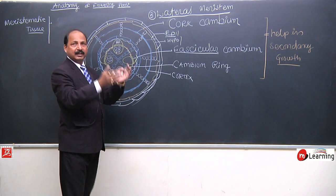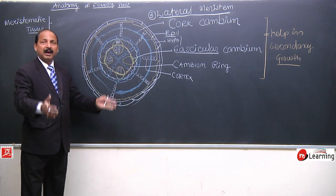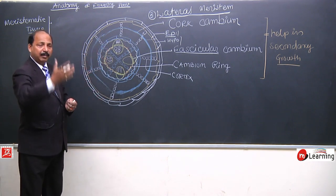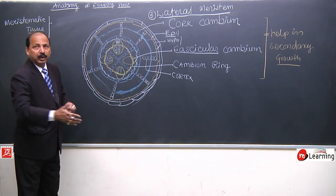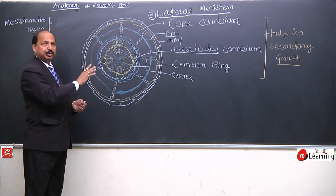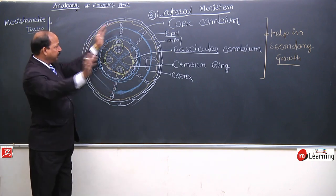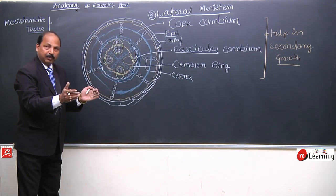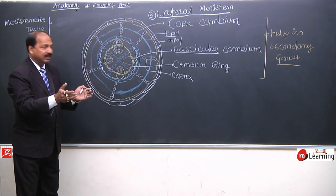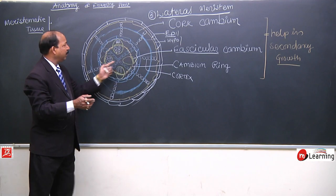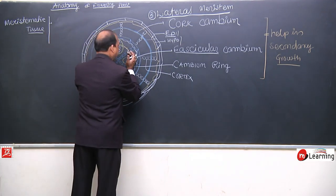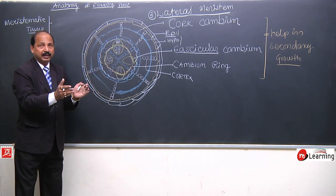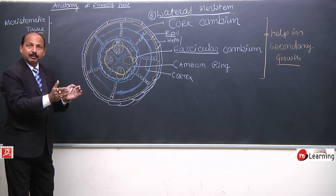To understand this diagram better, imagine the plant is standing upright. We cut a piece and paste it on the board. See the position — when it is cut and shown on the board, the fascicular cambium is here. Now when you stand the plant back up, where is this cambium? It is at the lateral side of the plant. So it is in a lateral position.